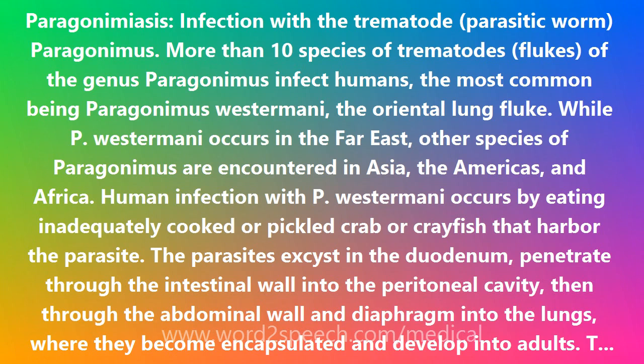While P. westermani occurs in the Far East, other species of Paragonimus are encountered in Asia, the Americas, and Africa. Human infection with P. westermani occurs by eating inadequately cooked or pickled crab or crayfish that harbor the parasite.